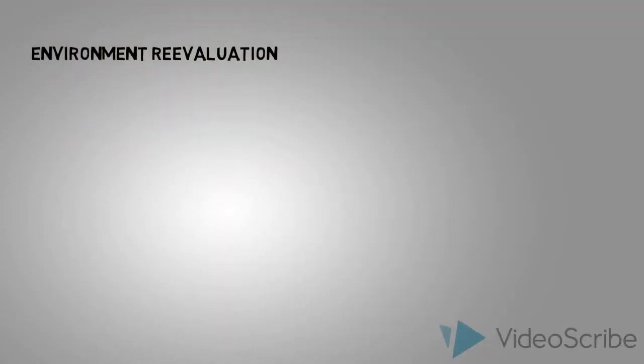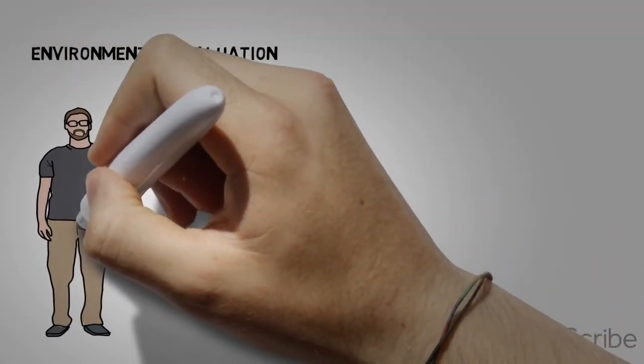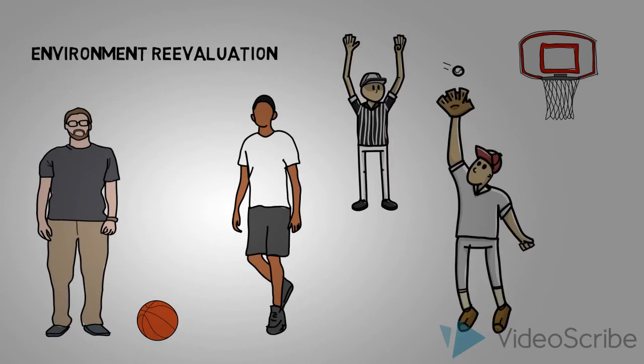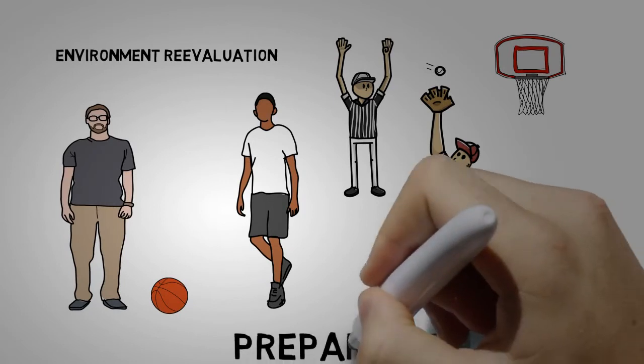Environment re-evaluation is when the individual realizes how their unhealthy behavior affects others. Billy realized that he wasn't able to keep up with his coworkers anymore when they would go play basketball.